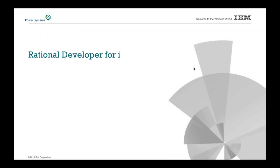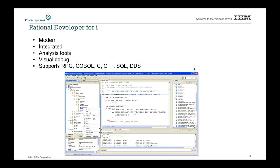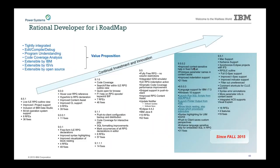Next, Rational Developer for i — we have our new version 9.5.1. It is our modern toolkit for RPG, COBOL, C, C++, SQL, and DDS development. This is the place to do your development. We continue to make major updates and enhancements, delivering a ton of things over the last year with continual investment and lots of new features and functions.